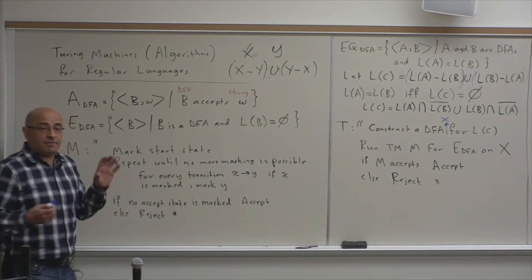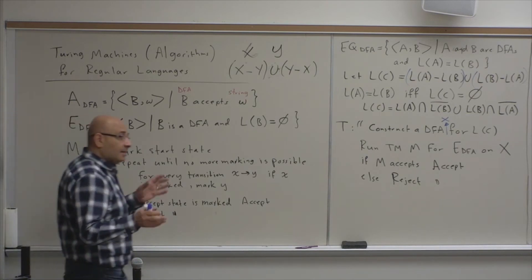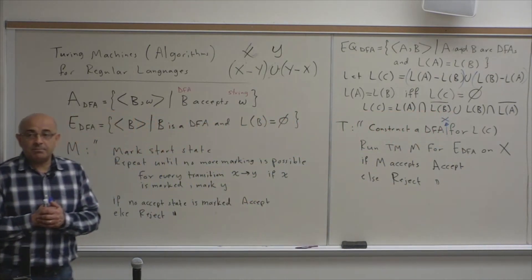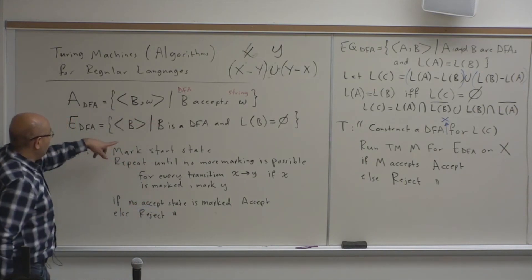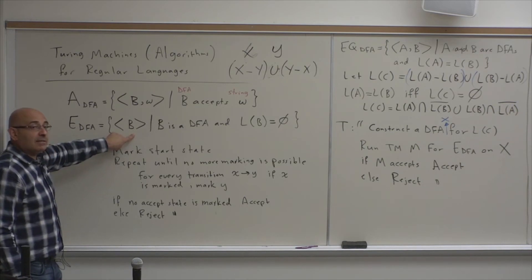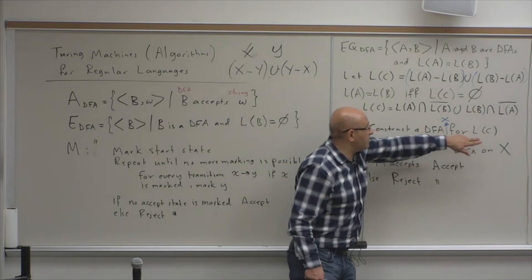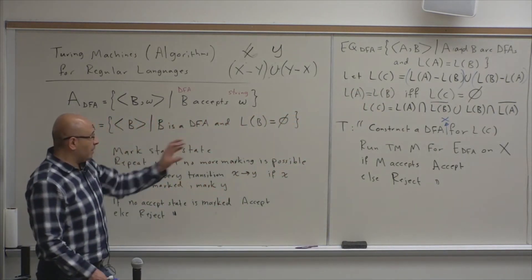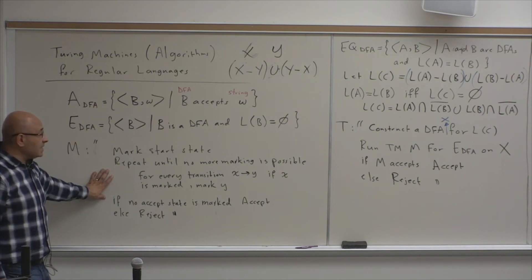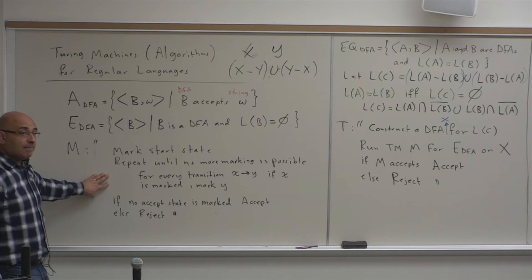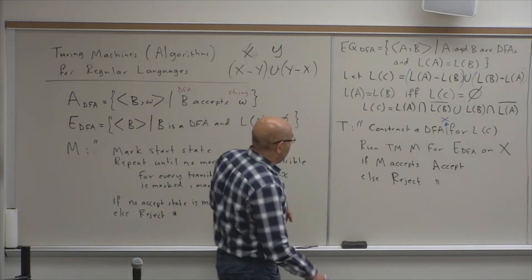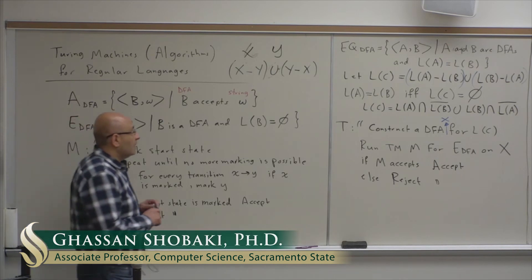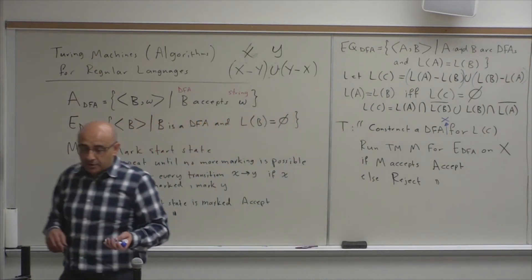The idea is to think of Turing machines as algorithms implemented as functions. You construct DFA X for L(C), which is L(A) intersected with complement of L(B) union L(B) intersected with complement of L(A), and input it into this Turing machine. If it accepts, A and B have the same language; otherwise reject. Next time, we'll attempt to do the same thing for context-free languages.